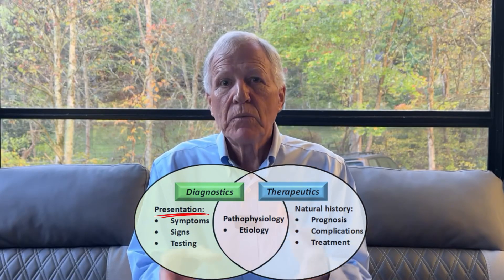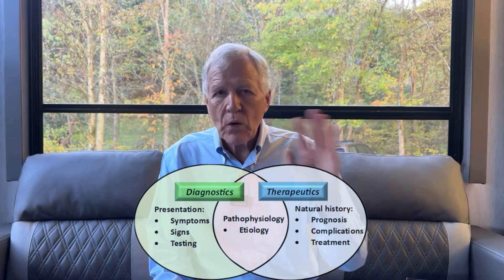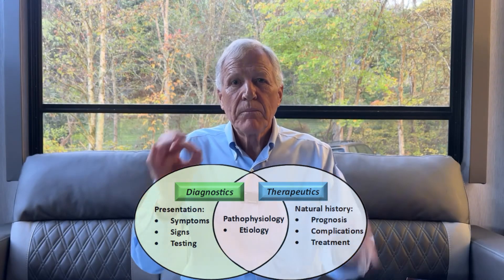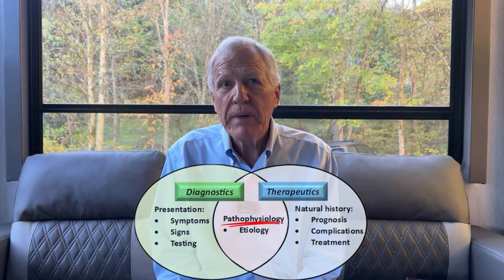Let's come back to our discussion. I have a diagnosis: presentation, pathophys, natural history. We've done presentation and we've talked about natural history. But both of those circles are going to overlay on pathophys. Good pathophys explains the presentation and explains the natural history. If you've got a pathophys that doesn't do that, you need to go back and find a really good, tight pathophys.